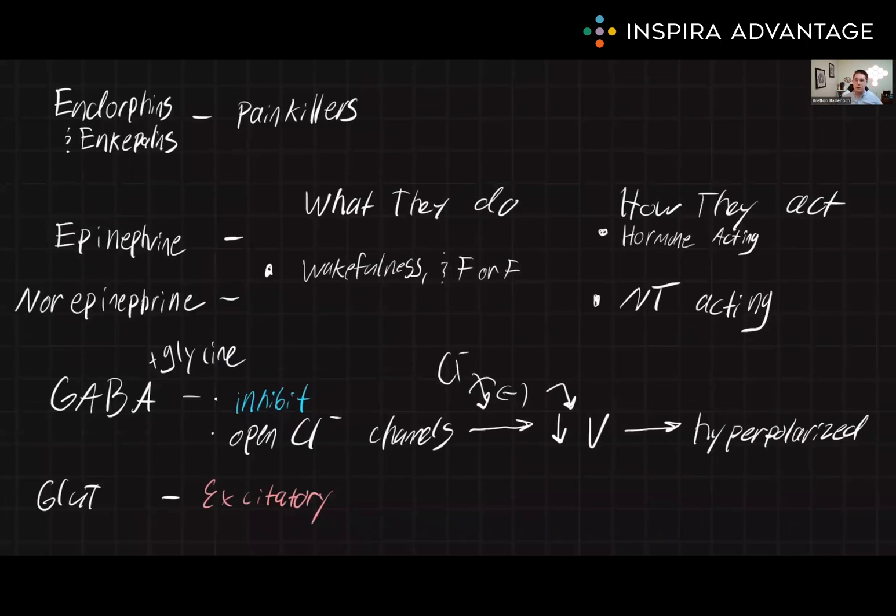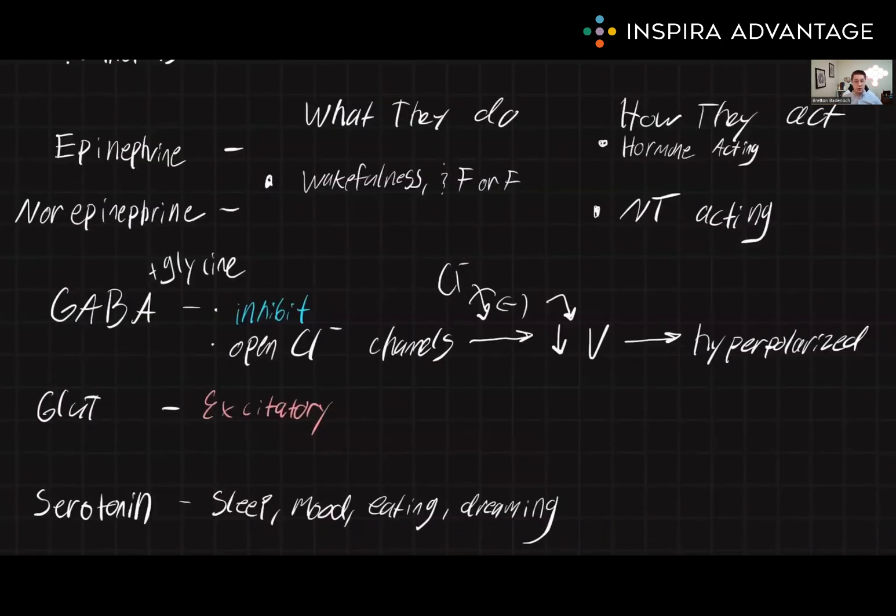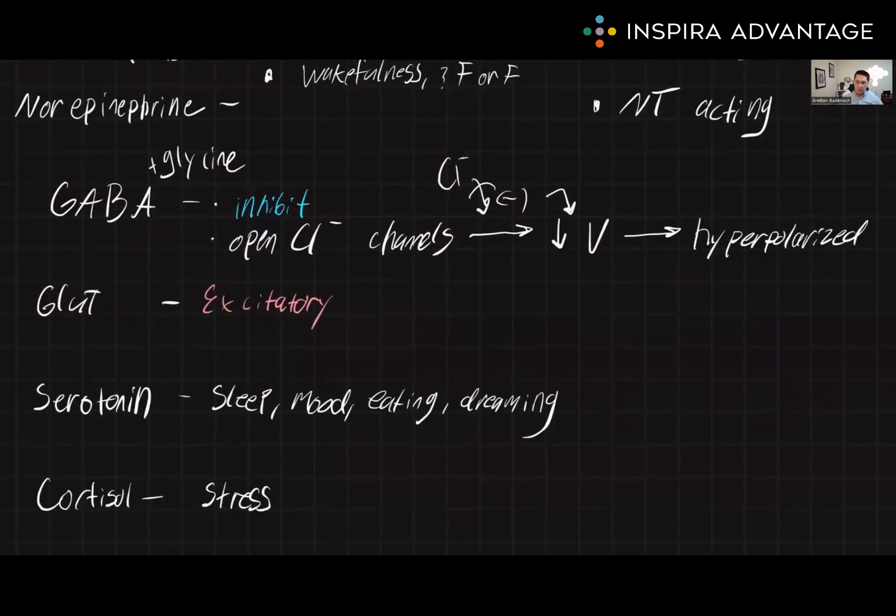Glutamate is the excitatory neurotransmitter you want to know for the MCAT. It is excitatory and stimulates the activity of other neurons. And next, we have serotonin, which helps modulate mood, sleep, eating, and dreaming, a whole host of things.